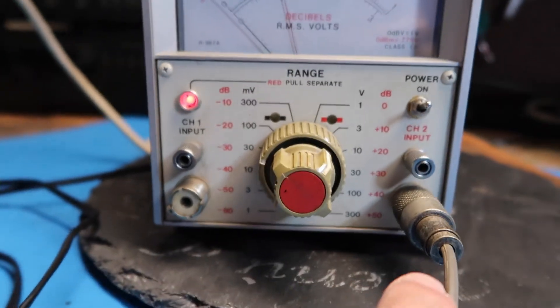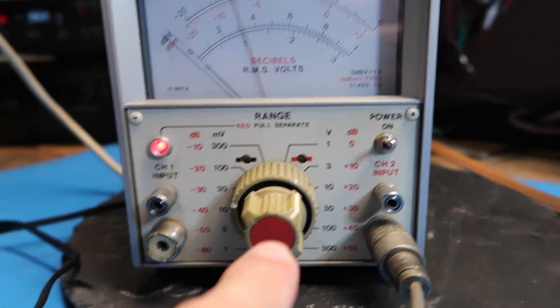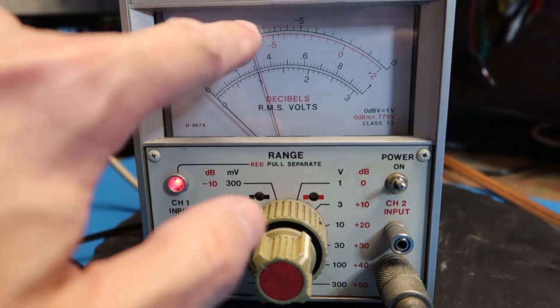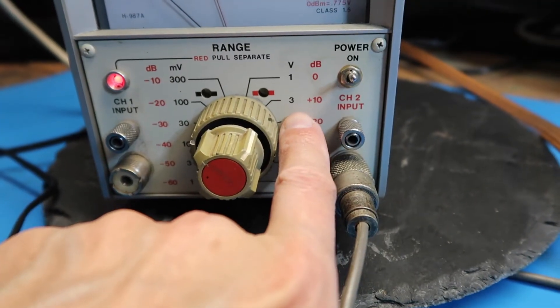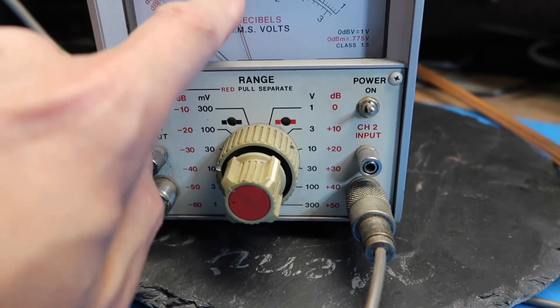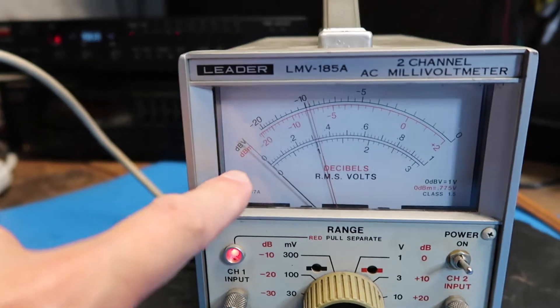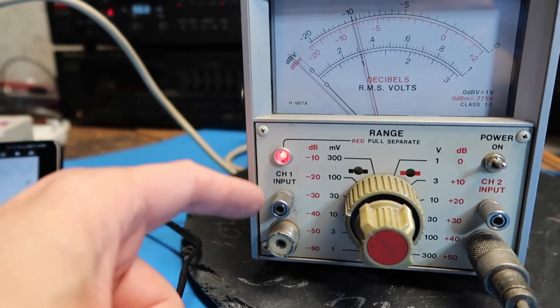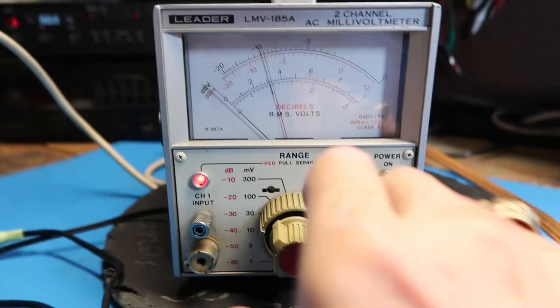So it looks like the way this works is channel 2 is red. As in red knob, red light, and red needle. So I've moved this to the 3 volt scale here. Back here. We use 1 for the red needle. I didn't realize at first that this had two different needles. So evidently black goes with channel 1. As a matter of fact, let's just try that.